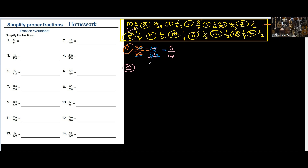The second one says 14 over 175. Now if we look at 14 and 175, we're going to look for a number that is going to divide 14 and also divide 175. So what number do you think we can use to divide both of them? What number can divide 14 and can divide 175?